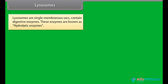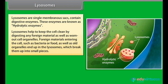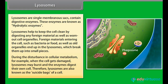Golgi apparatus functions include the storage, modification and packaging of products in vesicles. It also involves the formation of lysosomes. Lysosomes are single-membranous sacs that contain digestive enzymes known as hydrolytic enzymes. Lysosomes help to keep the cell clean by digesting any foreign material as well as worn-out cell organelles. During disturbance in cellular metabolism, when the cell gets damaged, lysosomes may burst and the enzymes digest their own cell. Therefore, lysosomes are also known as the suicide bags of a cell.